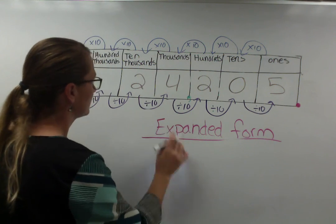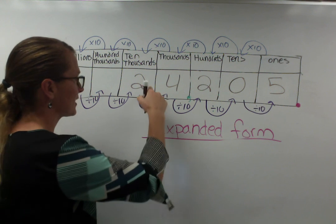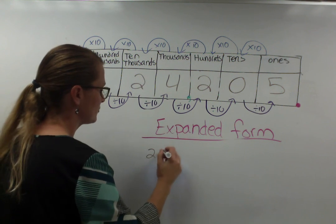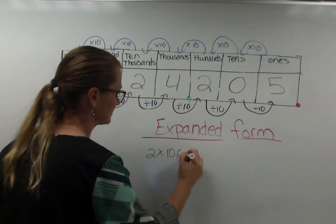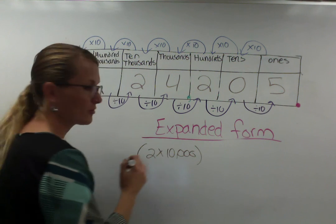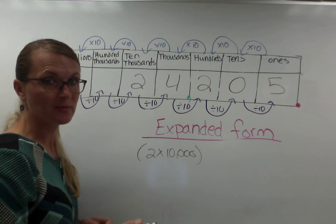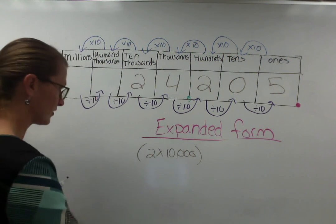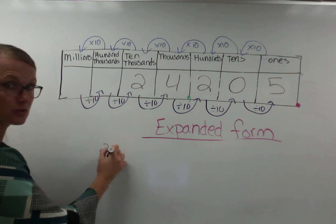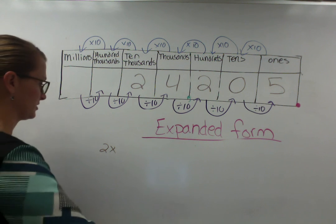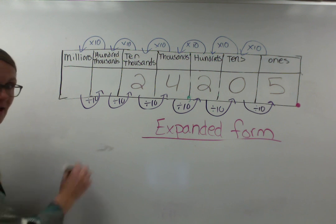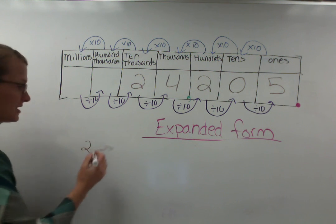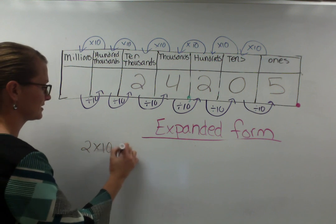So if we were to write this in fifth grade expanded form, we have two groups of 10,000. And we're going to put those in parentheses because they have to be together to make 20,000. I'm going to run out of room probably. Maybe I got to start further over here. So two groups, let's start further over. How about here? Close enough. Two groups of 10,000.